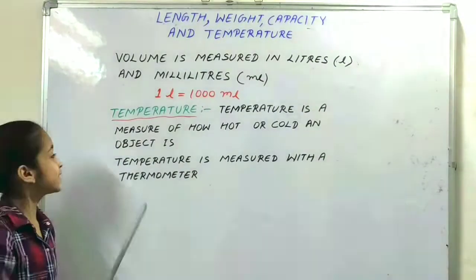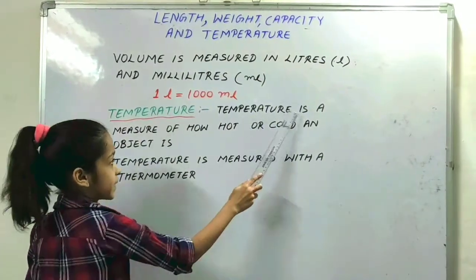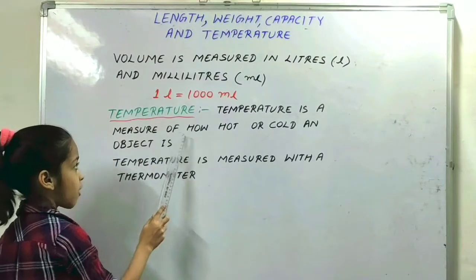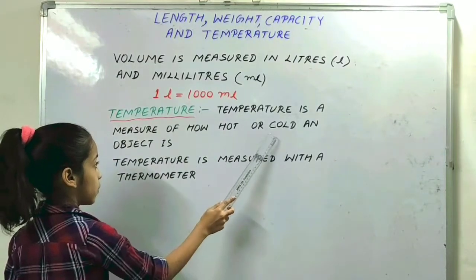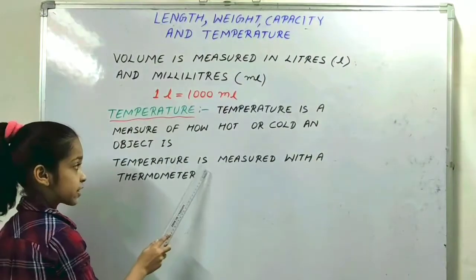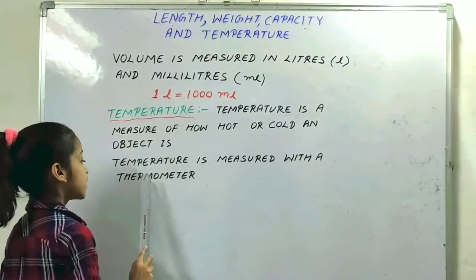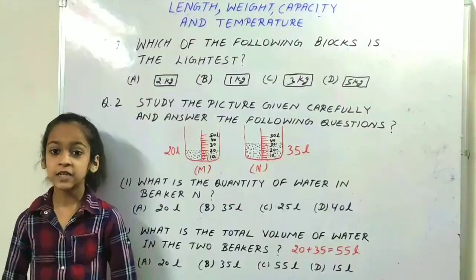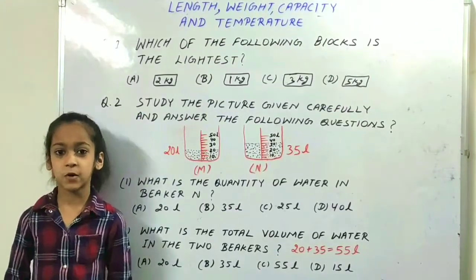Next is temperature. Temperature is a measure of how hot and cold an object is. Temperature is measured with a thermometer. So now we will solve some questions.